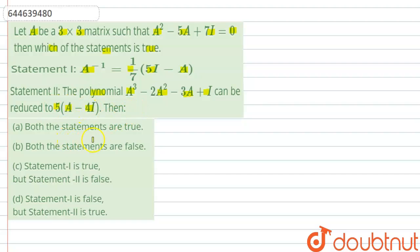Option A: both the statements are true. Option B: both the statements are false. Option C: statement 1 is true but statement 2 is false. Option D: statement 1 is false but statement 2 is true.